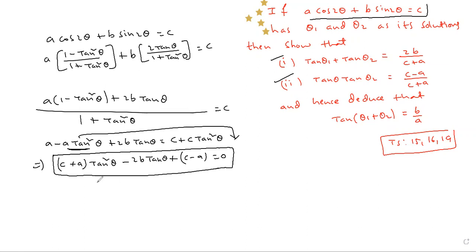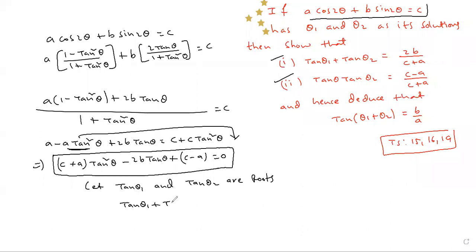This quadratic in tan has two roots. Let tan θ₁ and tan θ₂ be the roots of this equation. Now write the sum of the roots: tan θ₁ + tan θ₂ = −b/a from Vieta's formula, which gives 2b / (c + a), since −(−2b) / (c + a) = 2b / (c + a).